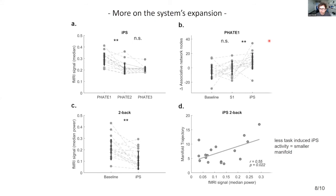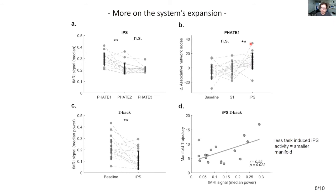Digging further into the IPS condition — which shows the greatest expansion — looking at the three dimensions, the one that reacts most in terms of change in fMRI signal is phase one, the first dimension. As mentioned, the first dimension is where IPS is actually located. Looking at the phase one dimension, the number of associative regions that become more activated is significantly lower in baseline and S1 conditions compared to the IPS condition. The IPS condition seems to drive the activity and pattern of interaction of these associative regions with the rest of the system.